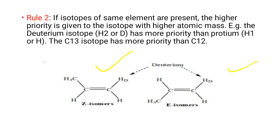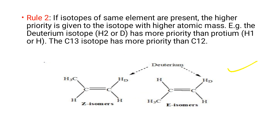An example applying Rule 2: for a Z-isomer involving deuterium and protium, the priority order is CH3 group first, then deuterium, then protium. When the higher-priority groups are on the same side, it is the Z-isomer; when on opposite sides, it is the E-isomer.